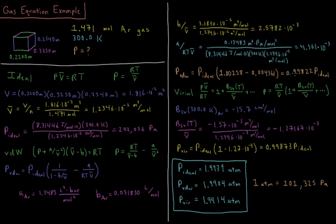They're a little bit more attracted to one another than the space that they take up. So the result is the Van der Waals pressure equals 0.99822 of the ideal pressure. The ideal equation was only off by about 0.2% here relative to the Van der Waals equation.